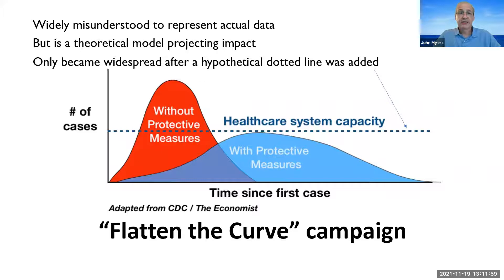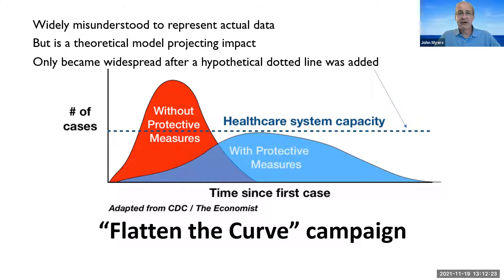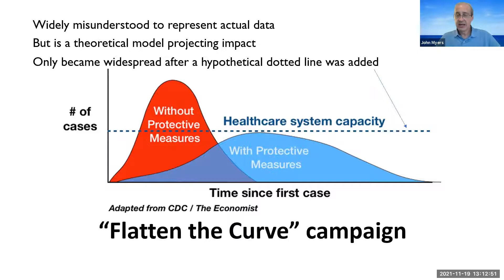But it also raises a couple of concerns. Most people understood it to represent actual data, and it's not — it's a theoretical model projecting impact. Articles have been written about the flatten the curve graph; there's a history to everything. This one was actually based on something done way before this, and it only really became widespread after a hypothetical dotted line was added for healthcare system capacity. People took it as truth — as some real measure. And of course, healthcare system capacity would vary so widely from place to place, so it's hard to make that case. I want to use this to illustrate some of the teaching challenges around these.